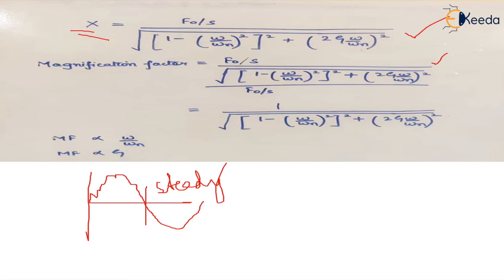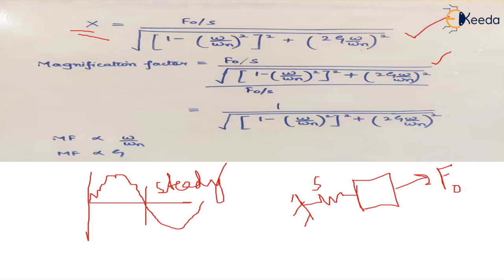The static deflection is the deflection of the spring under a static force F₀, given by F₀/s. This term appears in the magnification factor formula and cancels appropriately, giving the magnification factor as a function of two quantities: the frequency ratio ω/ω_n and the damping ratio ζ.